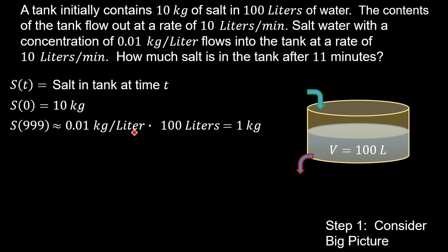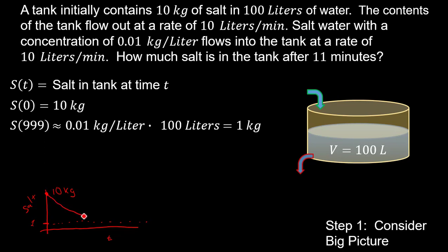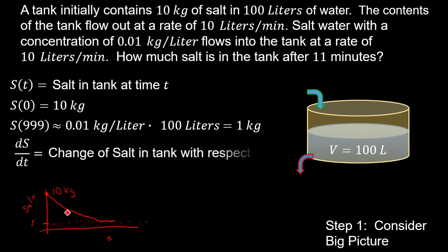We can box in the problem on a graph with salt on the y-axis and time on the x-axis. At T equals 0 we start at 10 kilograms, and eventually we decrease down to 1 kilogram, asymptotically leveling out. So DSDT — the change of salt in the tank with respect to time — is going to be negative, slowly decreasing toward 1 kilogram.